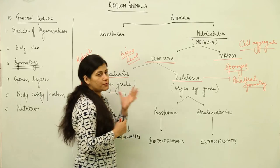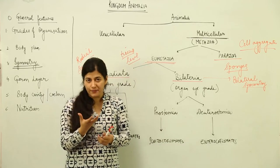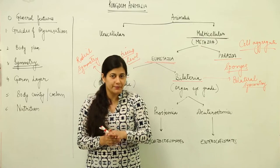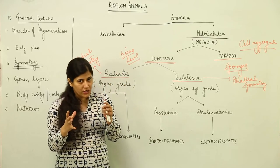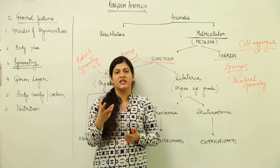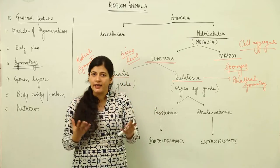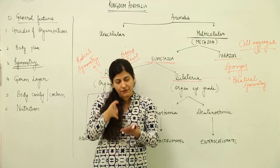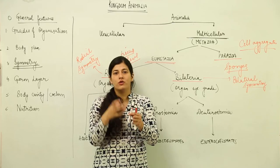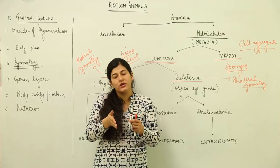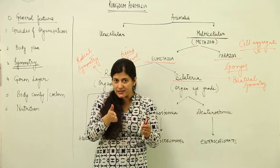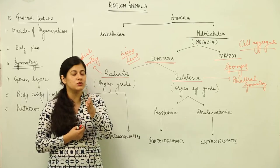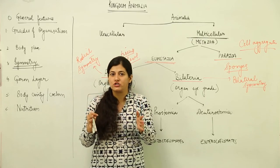Symmetry can be understood as follows: suppose you have a spherical ball in your hand — how many mirror images could be formed from it? The answer would be infinite. For an animal's body, how many mirror images could be formed by passing a central axis? If you have a round organism and pass a central axis, cutting the organism's body into two parts — how many mirror images are being formed? If there is only one axis which forms mirror images, that is one type of symmetry.